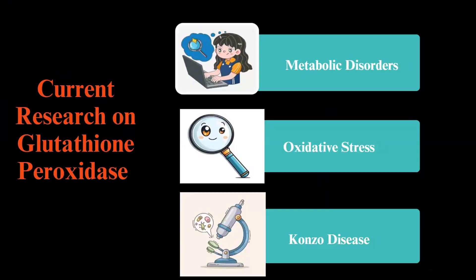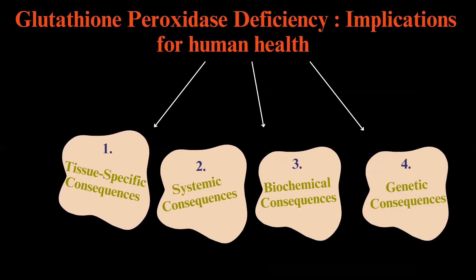Current research on glutathione peroxidase includes its role as a potential diagnostic marker in metabolic disorders including all types of diabetes, and in oxidative stress. Research also focuses on glutathione peroxidase deficiency and its implications for human health, including tissue-specific consequences such as neurodegenerative diseases, cardiovascular disease, and liver damage; systemic consequences such as immune system dysfunction and aging; and biochemical and genetic consequences including gene expression alterations and increased risk of genetic diseases.